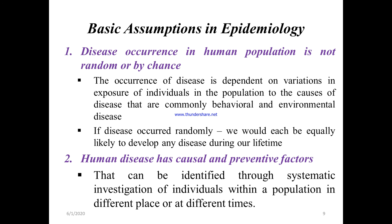The basic assumptions in epidemiology — there are two. First, disease occurrence in a population is not random or by chance. The occurrence of diseases depends on variation in exposure of individuals to causes of disease, which are commonly behavioral and environmental. If disease occurred randomly, each person would be equally likely to develop any disease during their lifetime. The other assumption is that human disease has causal and preventable factors.